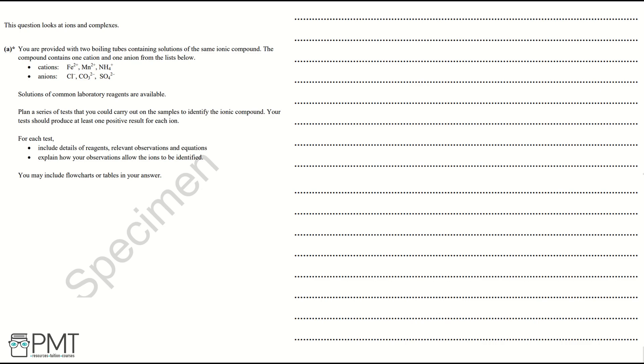Plan a series of tests that you could carry out on the samples to identify the ionic compound. Your test should produce at least one positive result for each ion. For each test, include details of reagents, relevant observations, and equations. Explain how your observations allow the ions to be identified. You may include flow charts or tables in your answer.